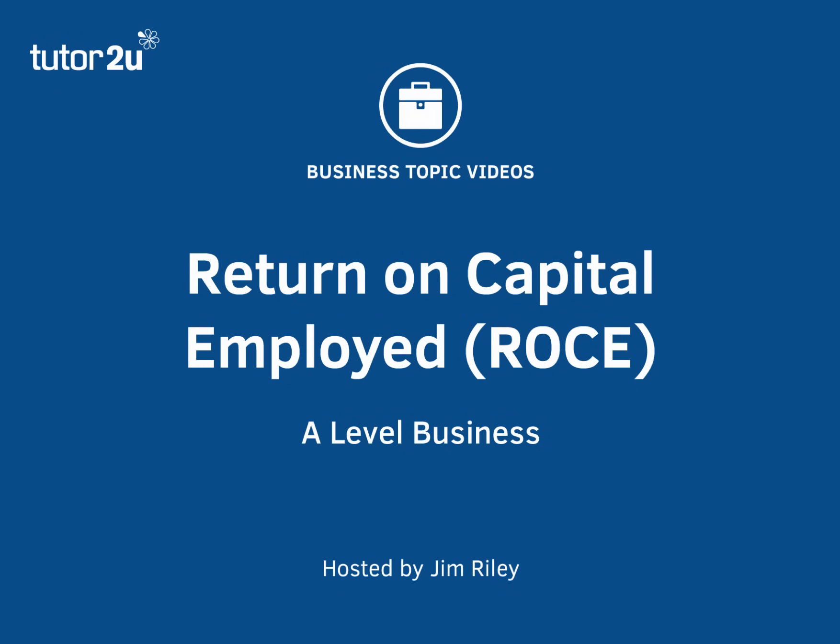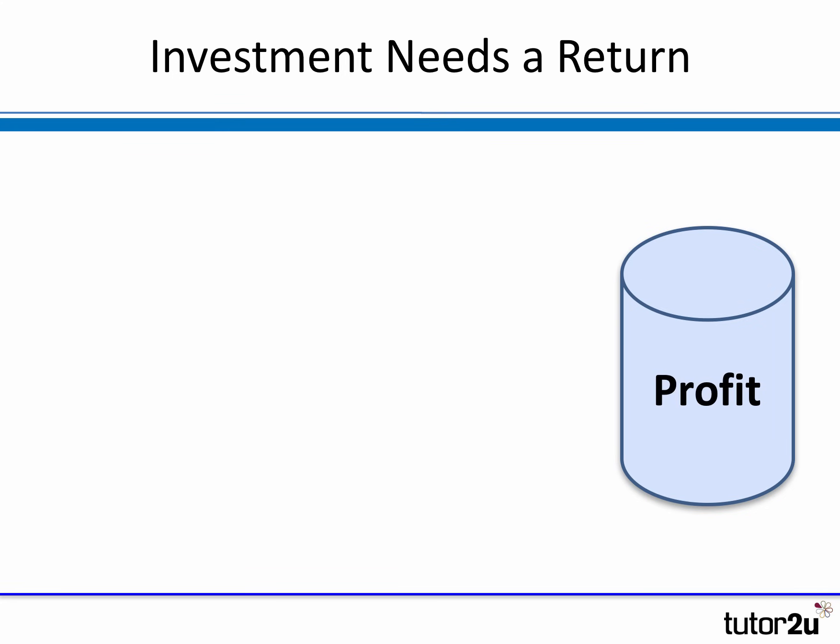In this business topic video, we're going to take a quick look at one of the most important financial ratios used to assess the financial performance of a business — it's called the Return on Capital Employed. The main return from business activities is profit, which is the difference between total revenues and total costs.